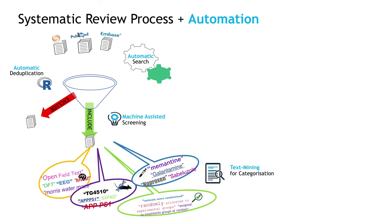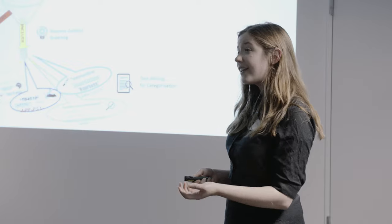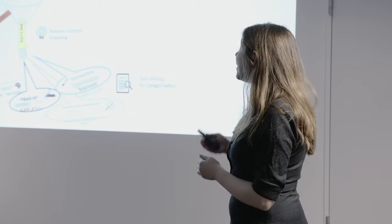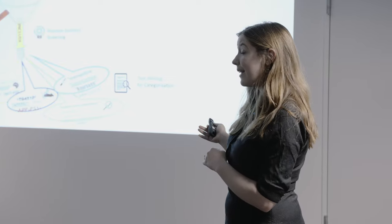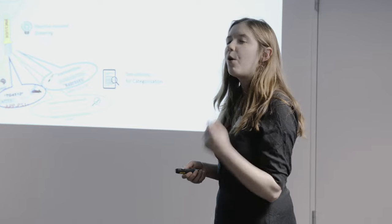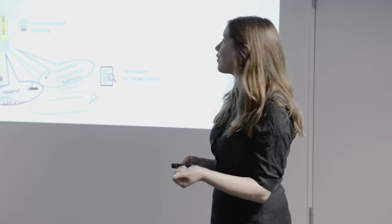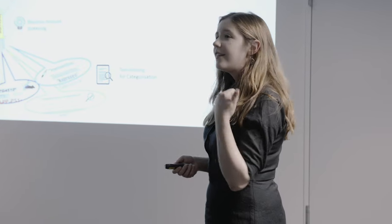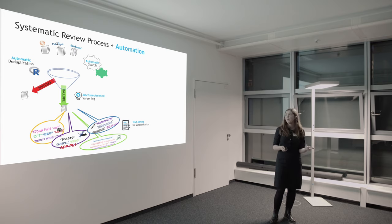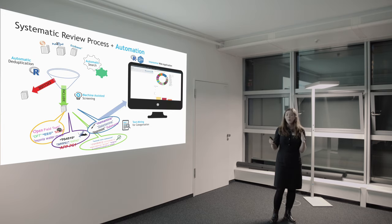From our included dataset we can take those full-text PDFs and actually retrieve some information automatically. We use a text mining technique called regular expressions to automatically categorize into different outcome measures, treatments, animal models, and to also get an assessment of the risk of bias.